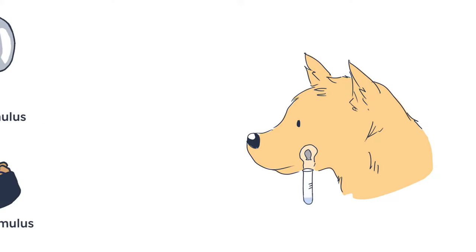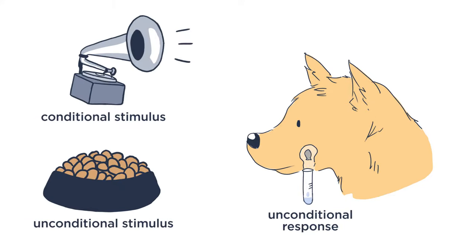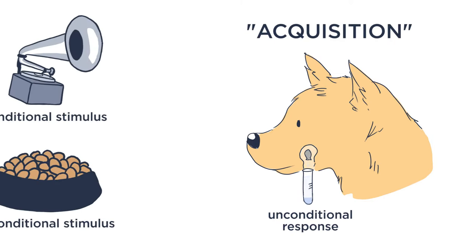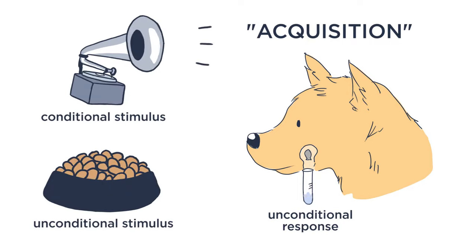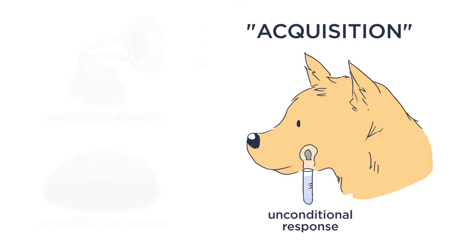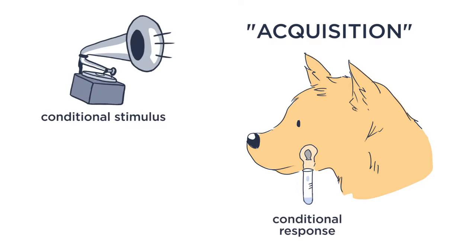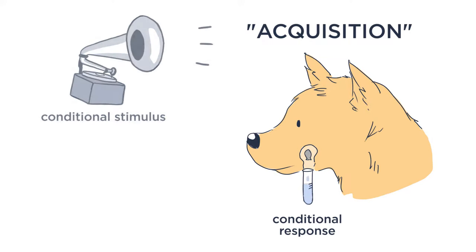As the two stimuli are presented together repeatedly, the dogs undergo a process known as acquisition, where they learn to associate the tone with the food. The response of drooling becomes not only an unconditional response to food, but a conditional response to the conditional stimulus. All you need to do is play the beep to make the dogs drool.